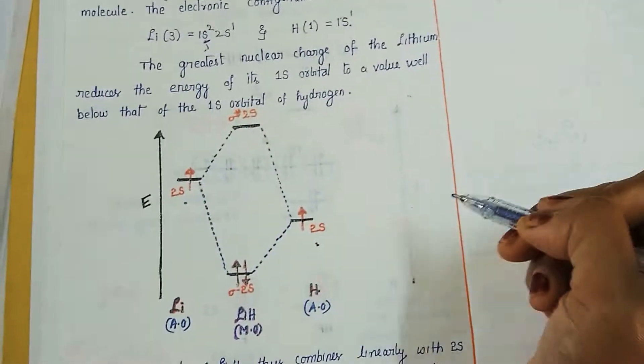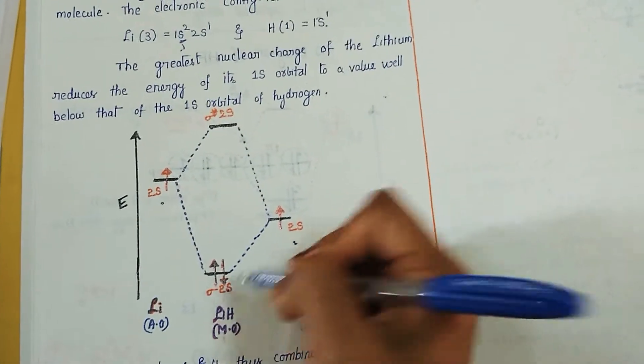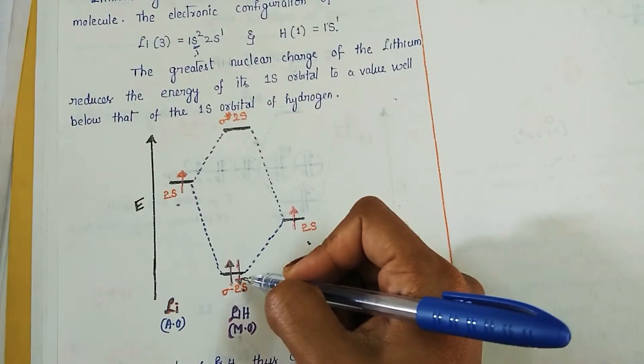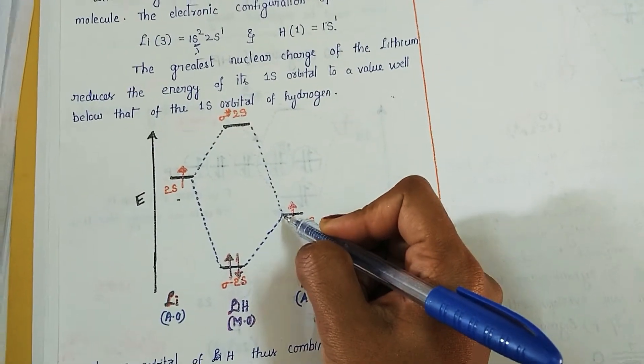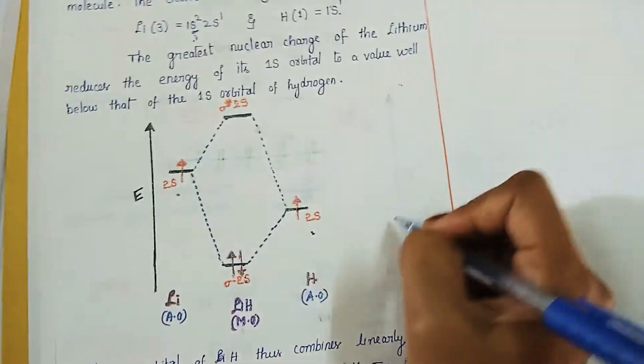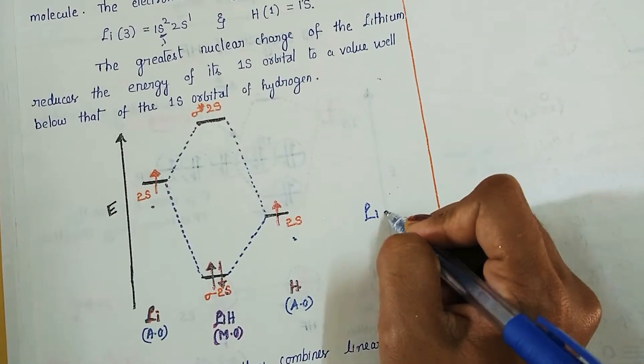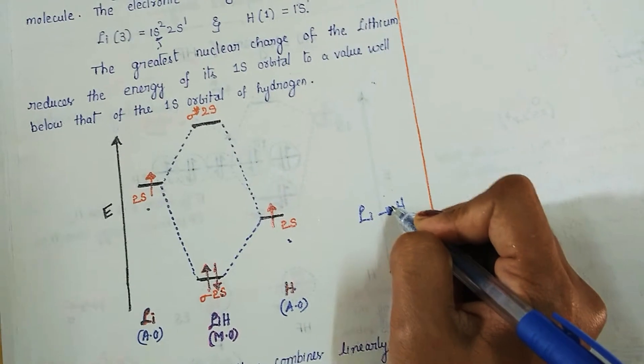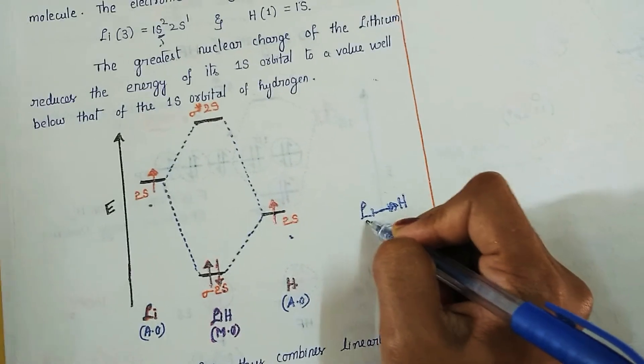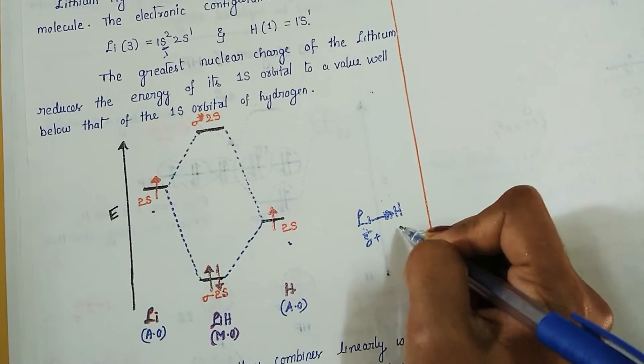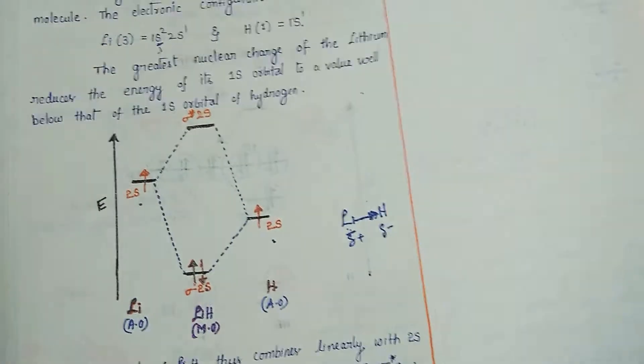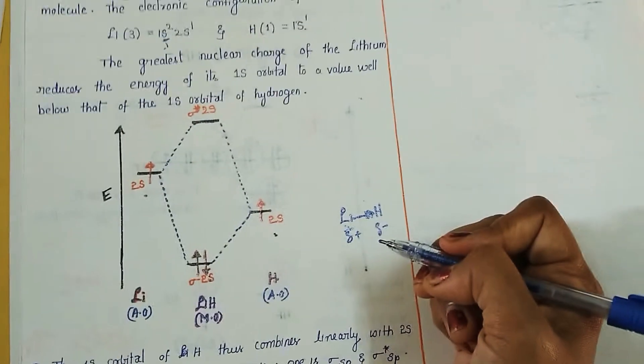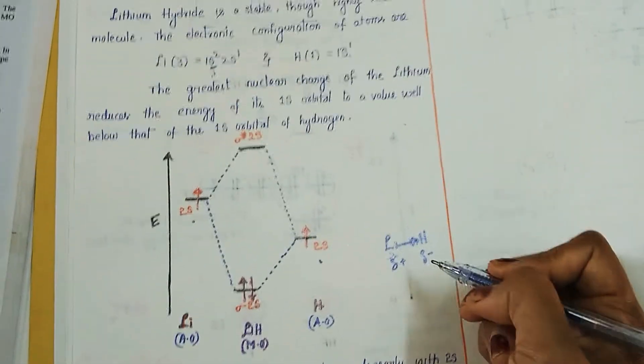So we can notice here the bonding molecular orbital electrons' contribution is much higher from hydrogen rather than lithium. So if you notice the lithium hydride bond, the electron density is having more shift towards hydrogen rather than lithium.